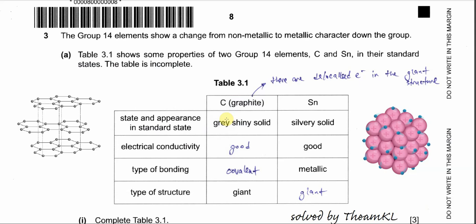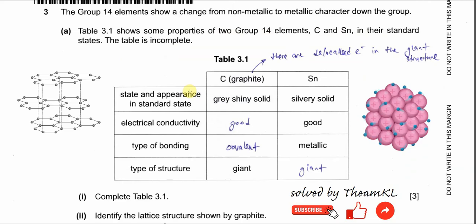Question 3, Part A. Table 3.1 shows some properties of two group 14 elements, carbon and tin, in their standard state. The table is incomplete. Part 1 completes the table. It gives the carbon allotrope graphite together with tin. For the state and appearance in the standard state: graphite is a grey solid, and tin is a silvery solid.